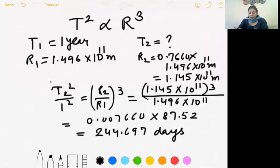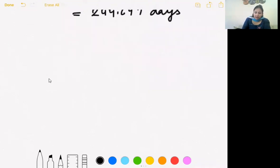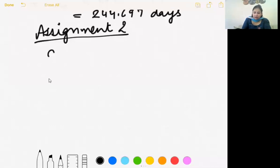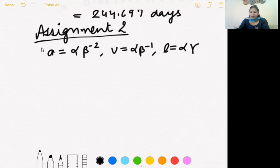Yes Gurjot kya doubt? Question number six, assignment number two. So you are given here three dimensions of quantities. Acceleration ki aapko di gai hai alpha beta minus two. Velocity ki dimension they have given alpha beta minus one and length ki dimension alpha gamma. Dimensional formula diya hua hai.